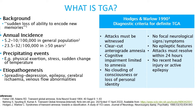with complete recovery after a few hours. The annual incidence of transient global amnesia is about 5.2 to 10 per 100,000 in the general population, with the incidence increasing to 22.5 to 32 per 100,000 in patients aged 50 and older.